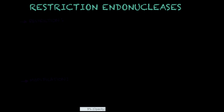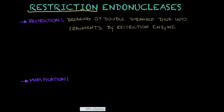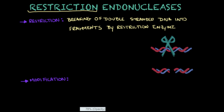Before we go into more details on restriction endonucleases, I would like to give you two brief definitions. The first one is 'restriction,' present in the name restriction endonucleases. Restriction basically means that you are breaking a double-stranded DNA into fragments — very important — by a restriction enzyme. In other words, restriction means that you're going to cleave or cut a DNA molecule into smaller fragments, and this is definitely part of the function of restriction endonucleases.